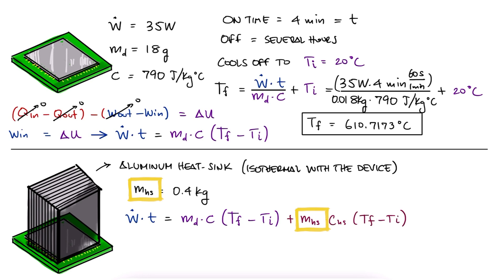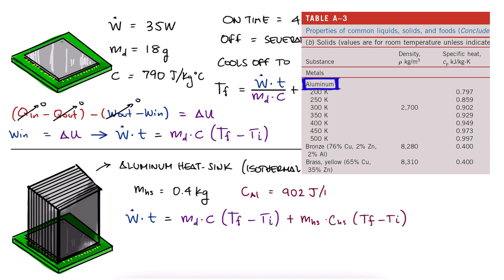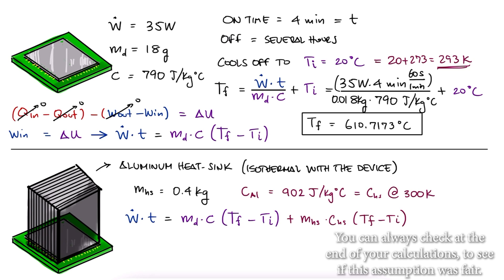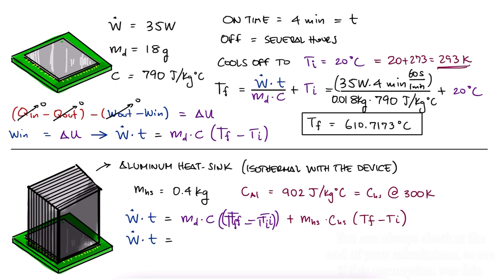We have the mass, and we can look up the specific heat for aluminum around 300 Kelvin. The temperature is a bit lower than 300 K, but since we expect the heatsink to rise in temperature while the device is on, it's ok to take the specific heat for that value. We factor out the change in temperature, since both objects are isothermal.